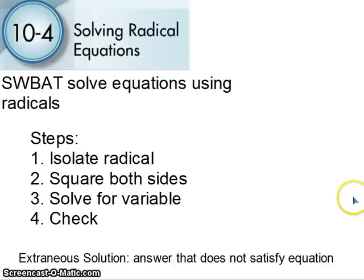All righty then, solving radical equations. We're moving on with our radicals. Isolate the radical, get the square root by itself, square both sides, solve for it, and then check. Now I know you don't like this, but the reason why we check is something called an extraneous solution. It doesn't actually make the equation true. Weird, huh? So it comes out as a solution, but if we check it, it turns out that it doesn't work.